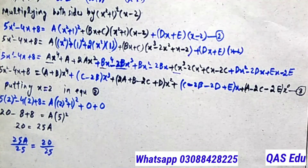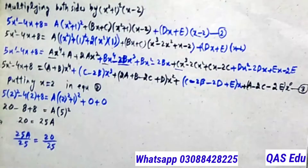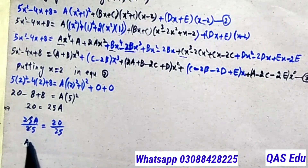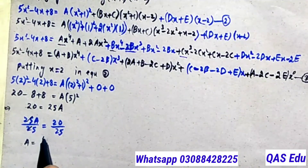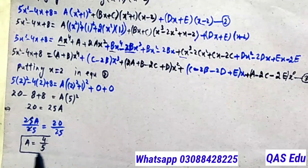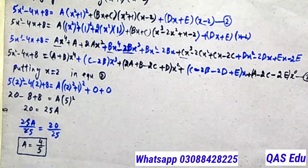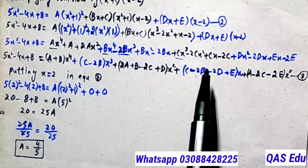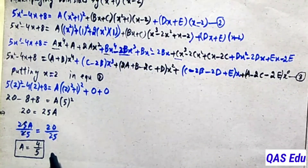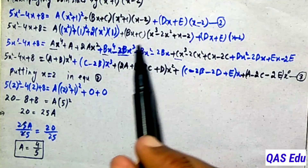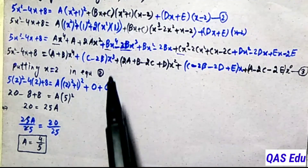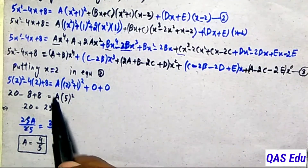So A equals 4 over 5, which is now a known constant from equation number 2. Now we proceed to compare coefficients of like powers of x in equation number 3 to find the remaining constants B, C, D, E.